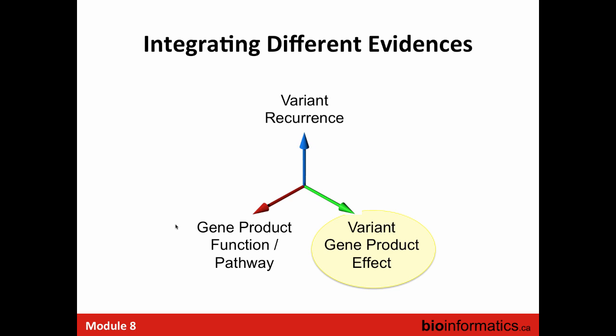There are different types of evidence to consider when talking about variants: variant recurrence or frequency — the relative frequency of an allele in the population across all chromosomes; gene product function — the role of that gene in a biological process or pathway; and the effect of the variant on the transcript and protein function.